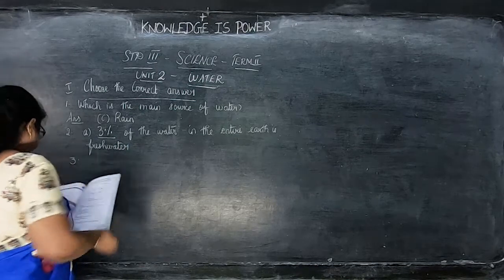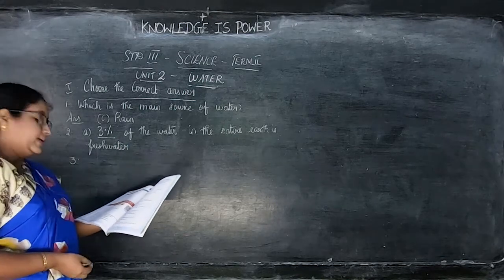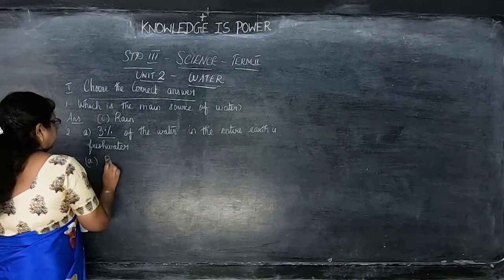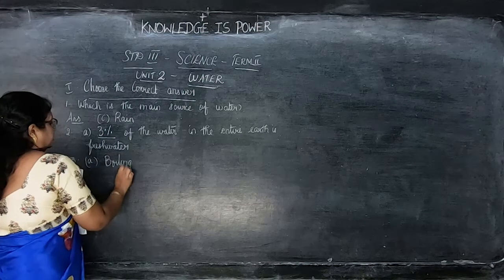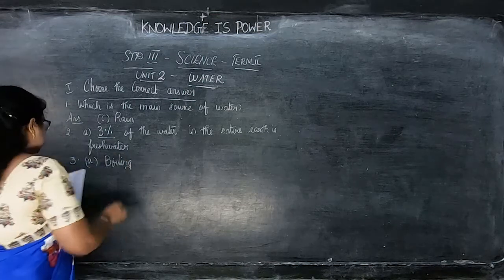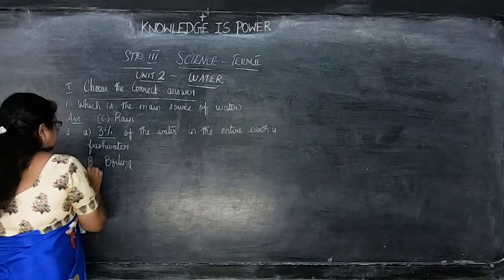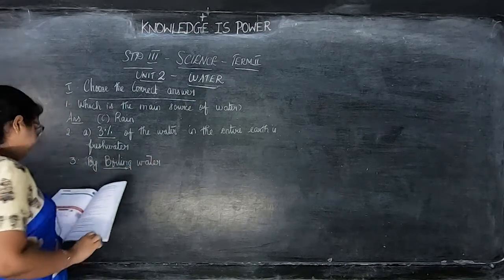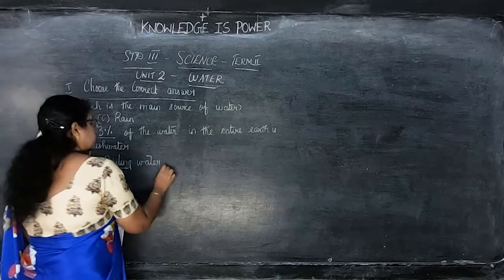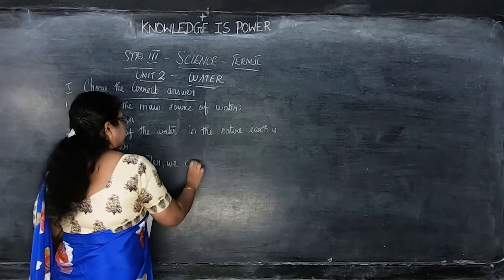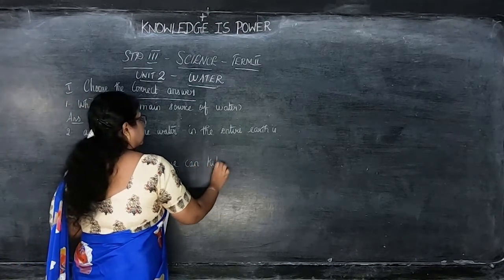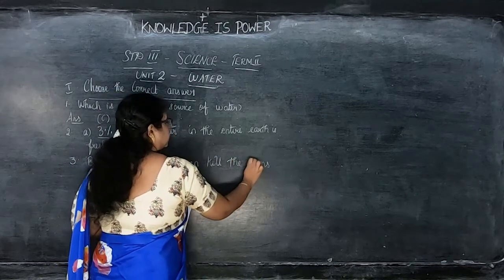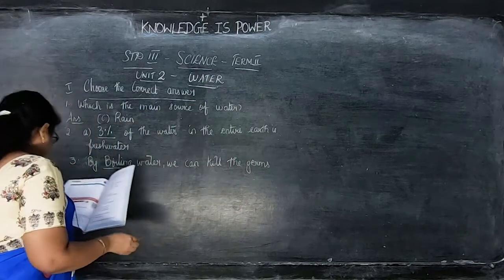Third: by dash water we can kill the germs. The answer is boiling — by boiling water we can kill the germs.